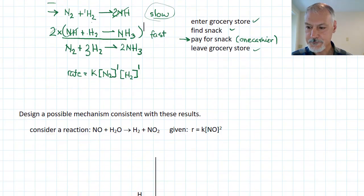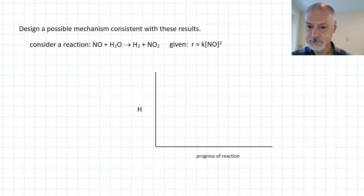Let's look at some others. We want to design a mechanism consistent with this information. Nitrogen oxide colliding with water to make hydrogen and nitrogen dioxide. So that's the overall reaction. My steps have to total up this, and we're given this.